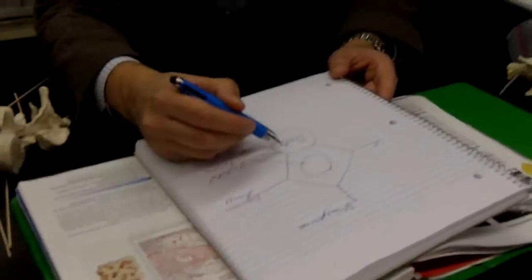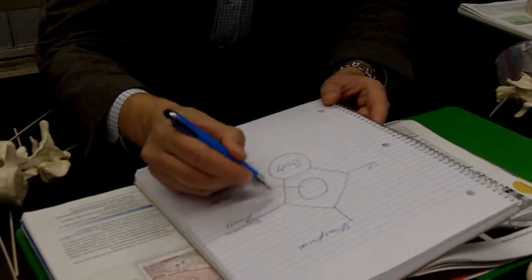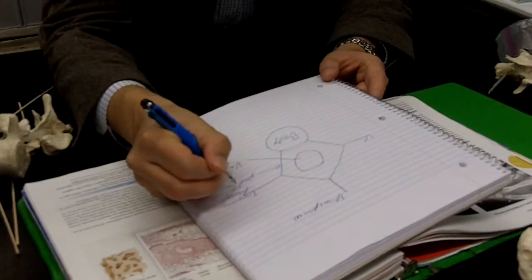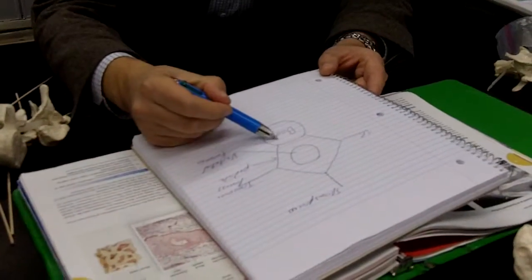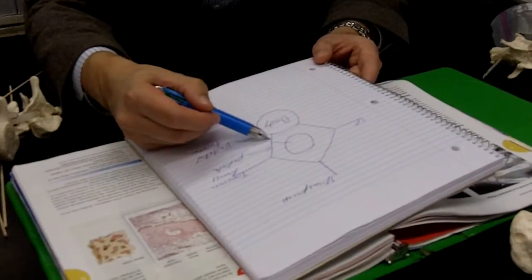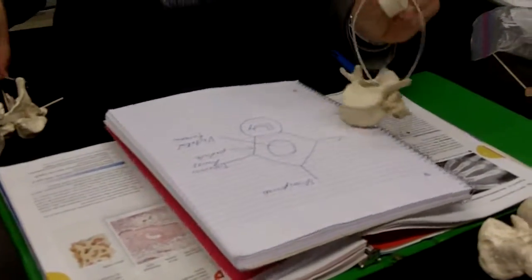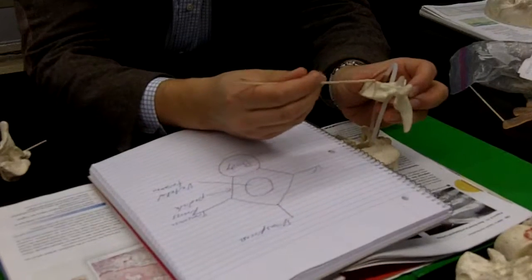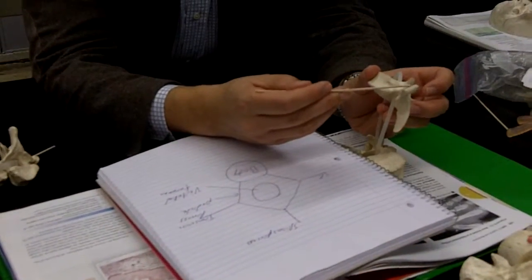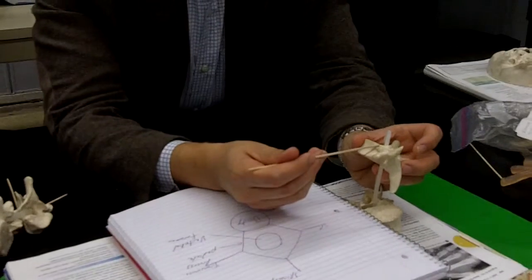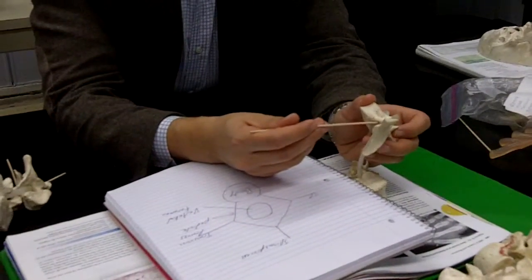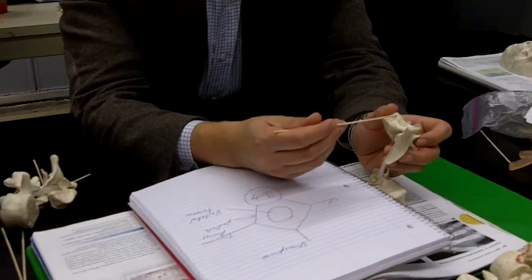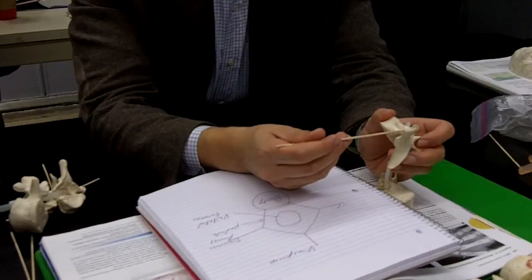The part of the bone that connects the body to the transverse process — this right here — is referred to as the pedicle. So connecting the body to the transverse process is called the pedicle. Here's the body, here's the transverse process, and connecting the body to the transverse process is this piece right here referred to as the pedicle. Does everybody get that?